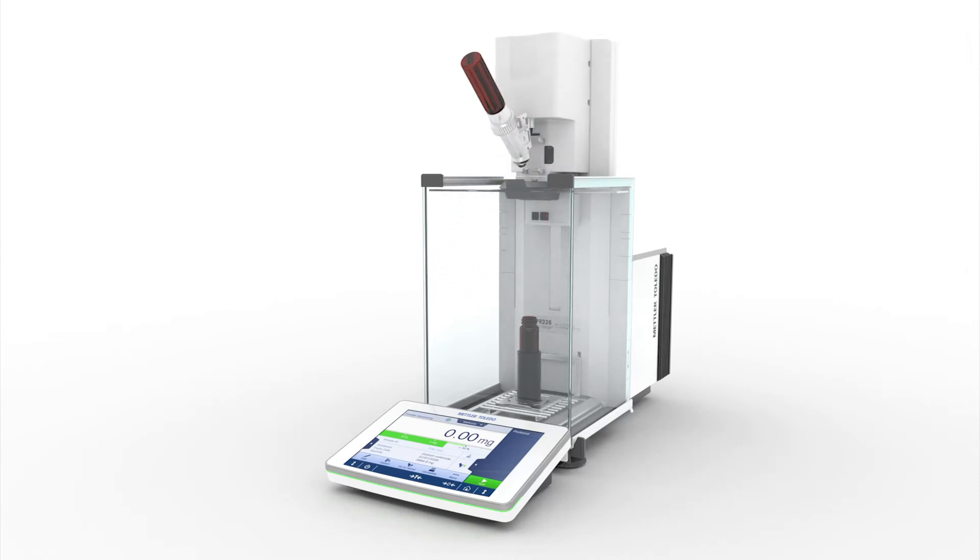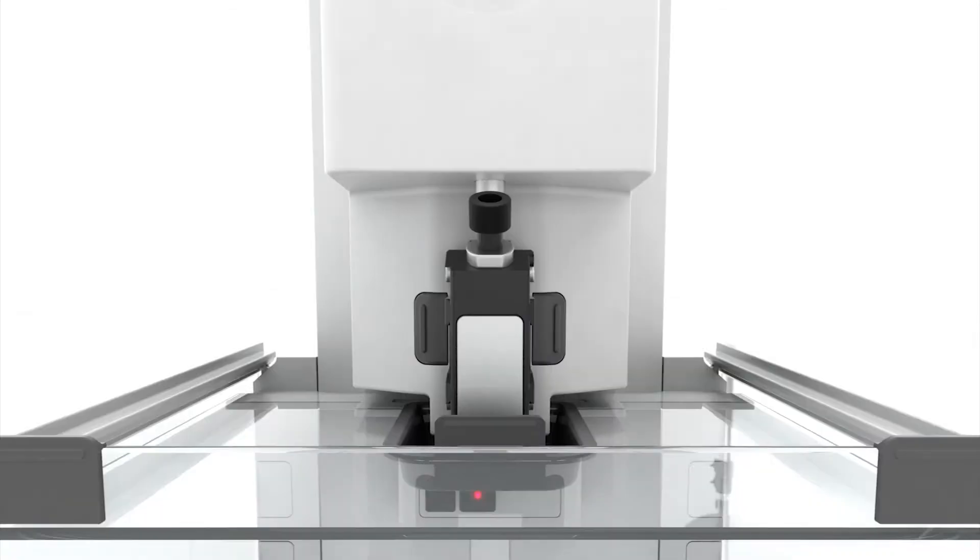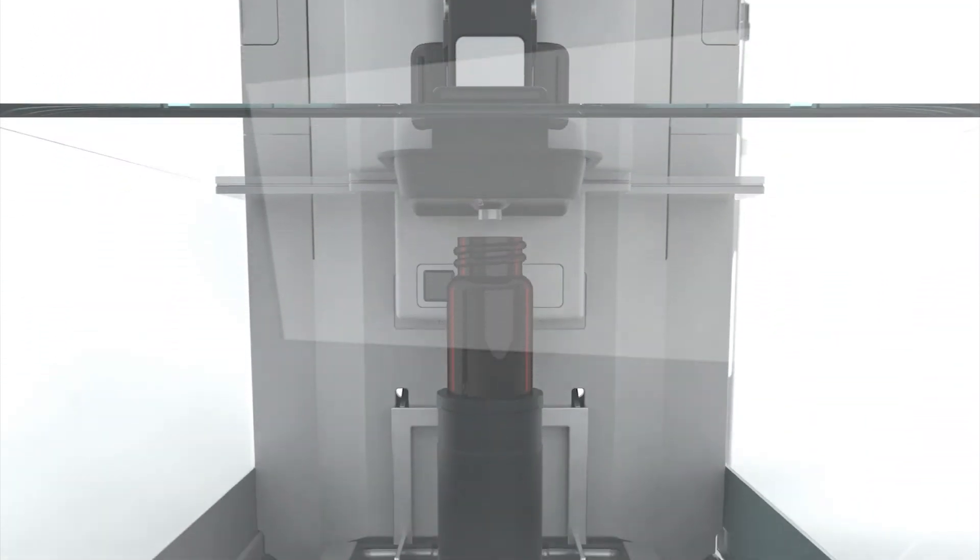Not only is gravimetric standard preparation more accurate and reliable than volumetric methods, but you can prepare just the small amount of solution you require for your HPLC analysis. You don't need to align with the larger volumes on volumetric glassware.